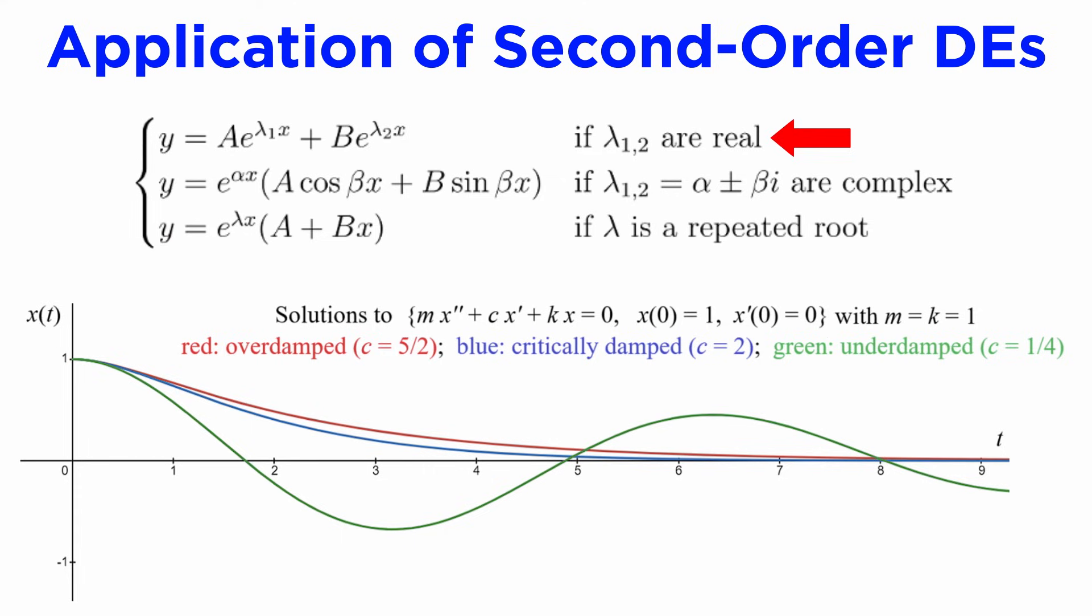In the first case, the roots of the characteristic equation were real, and we say that the motion is overdamped, and the trolley will be slowly brought to rest. In the second case, the roots were complex, and due to the trigonometric functions in the solution, we will see oscillations back and forth, eventually converging on a stable equilibrium position, a type of motion we call underdamped.